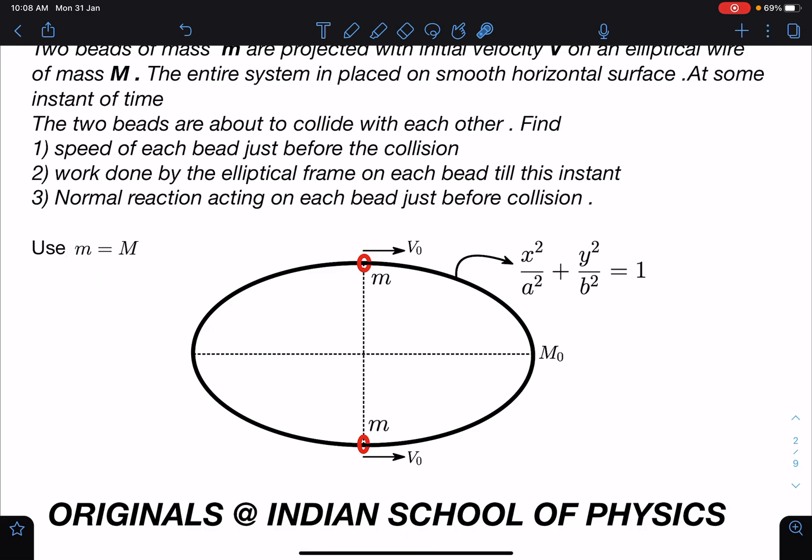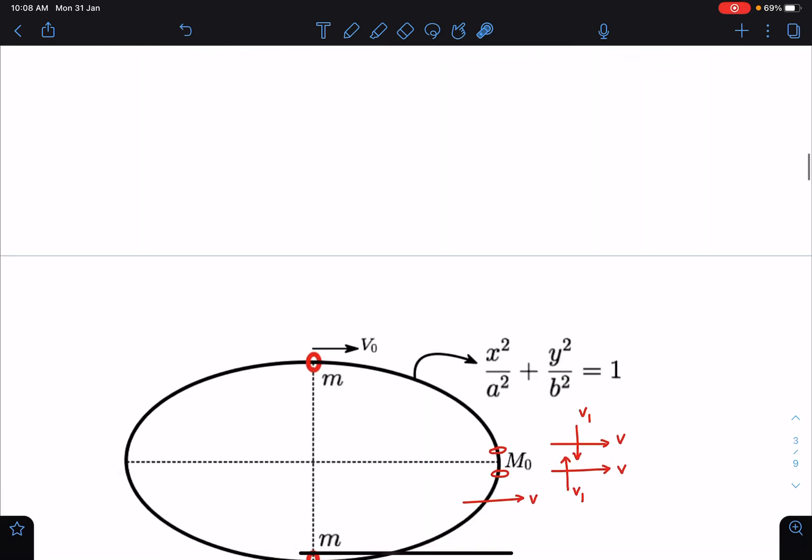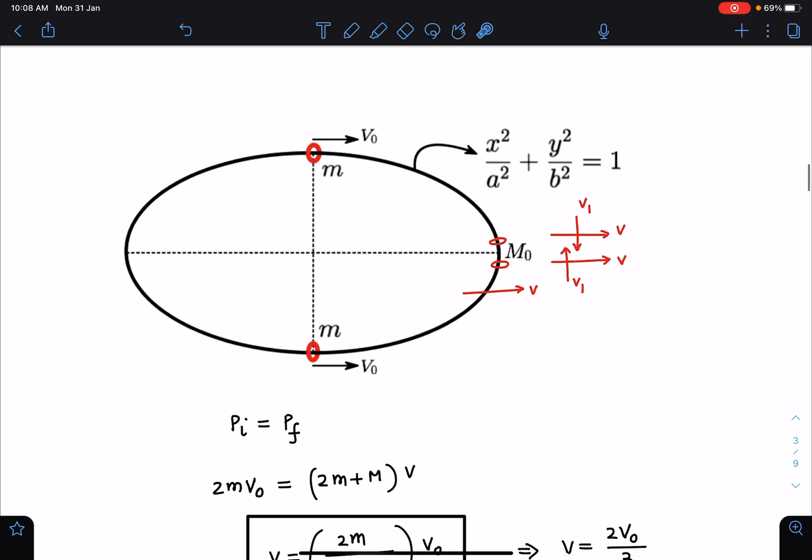Here you can see at the time when these beads are about to collide, it will be moving in this direction and downward. Similarly, this bead will be moving in horizontal direction and upward direction. This frame itself will be moving in right side direction due to the normal reaction between the beads and the elliptical wireframe.